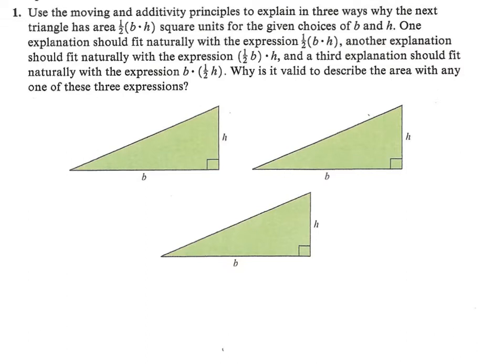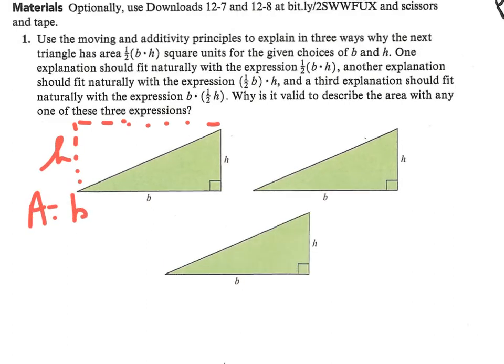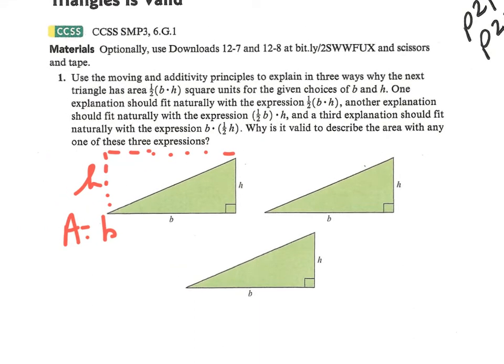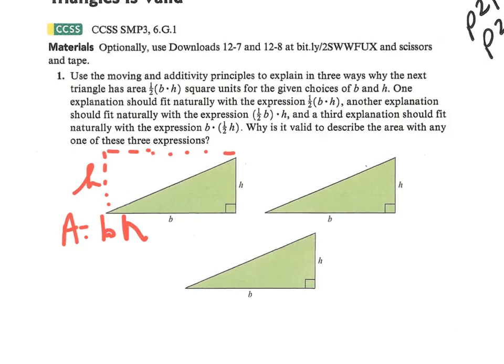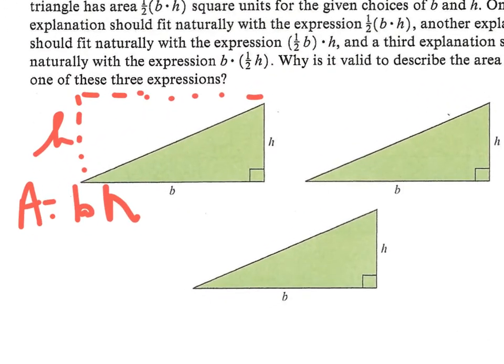So let's go ahead and take this first guy and if we double him and then put the copy up here that gives us then a rectangle who has area base times height, but because we doubled the triangle the area of the triangle is equal to one half that.